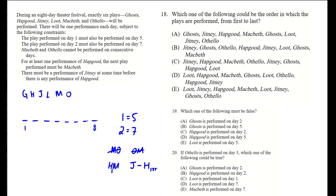Which of the following could be the order in which the plays are performed from first to last? Each of these answers — well, four of them — will probably violate one rule. Let's check our list. One has to equal five, so we go through the list and see where day one does not equal day five. Looking at answer E, we have Loot on day one and day four.